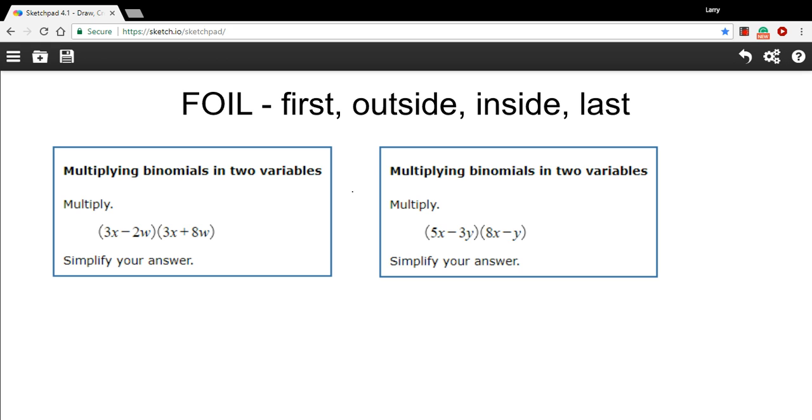It doesn't really change the method by which we multiply binomials. We're still going to use this FOIL method: multiply the first, then the outside, then the inside, then the last, and then add together any like terms that we can.